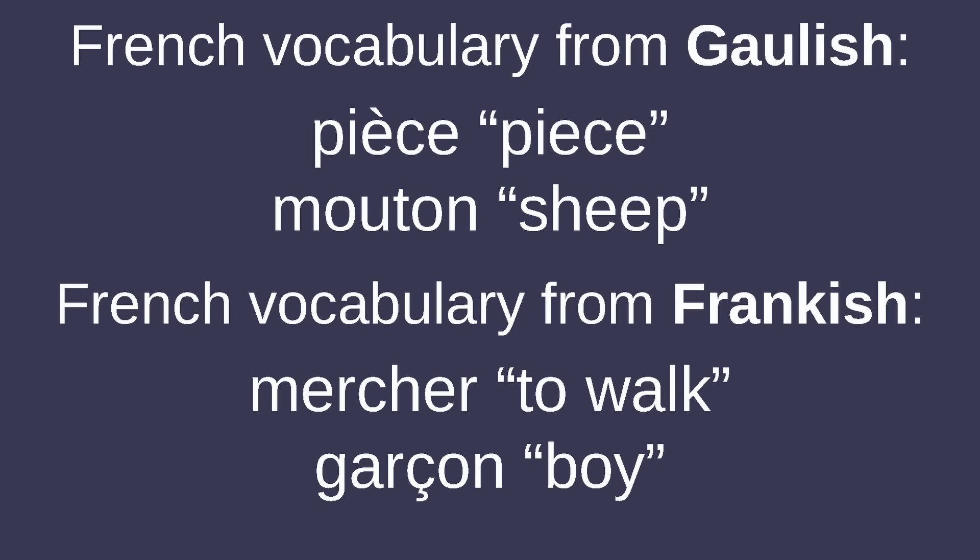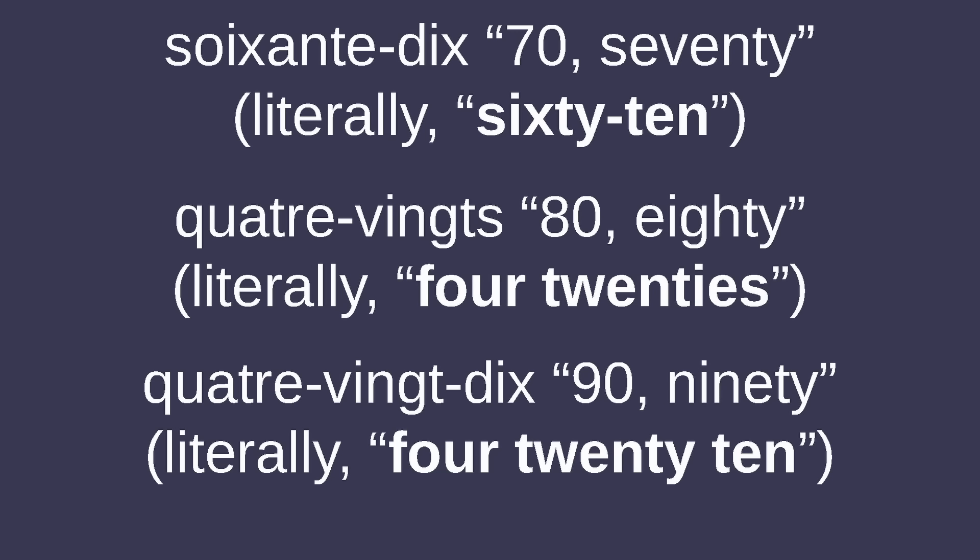With the vocabulary side of things, there's been a significant influence from the extinct Celtic language Gaulish and the Germanic Frankish language. Numbers 70 through 99 are infamously wonky in French, with 'soixante-dix' for 70 literally translating as 60-10, 'quatre-vingts' for 80 as 4-20s, and 'quatre-vingt-dix' for 90 being 4-20-10.